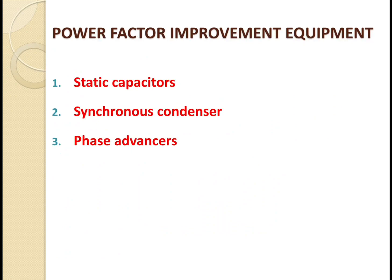Today I will start with the first topic: Power Factor Improvement Equipment. There are different kinds of equipment which can be used for Power Factor Improvement. Normally, the power factor of the whole load on a large generating station varies in the range of 0.8 to 0.9. But sometimes it is lower, and in such cases it is generally desirable to take special steps to improve the power factor. This can be achieved by the following equipment.